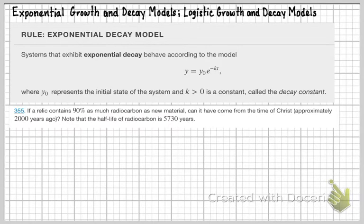Exponential Decay Model. Systems that exhibit exponential decay behave according to the model y equals y naught e to the negative kt, where y naught represents the initial state of the system and k is greater than zero is a constant, called the decay constant.